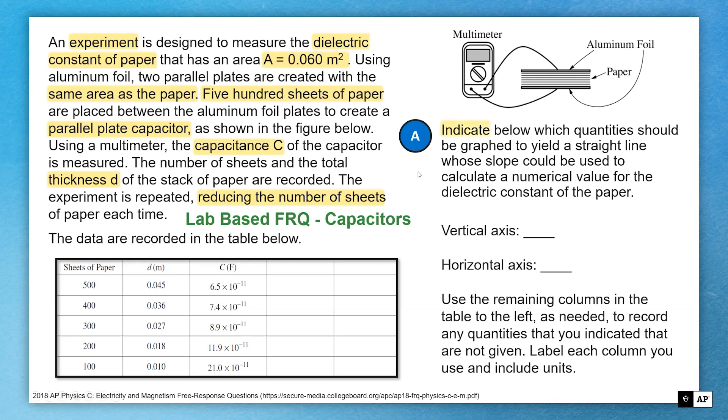With that said, let's hop into this problem. I want to indicate which quantities should be graphed to get a straight line whose slope could find the numerical value for the dielectric constant of the paper. Anytime you see questions like this, oftentimes it's a small manipulation if not directly from that equation.